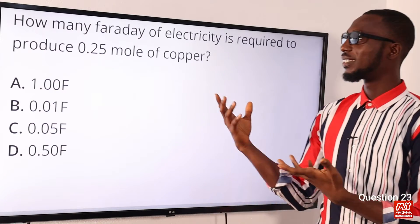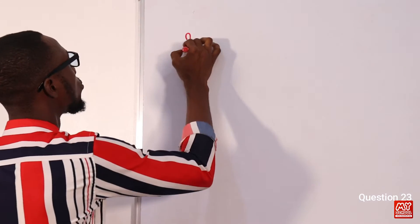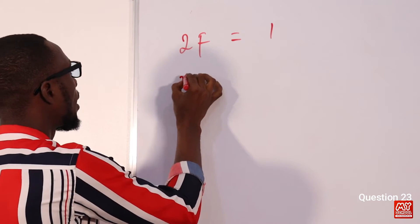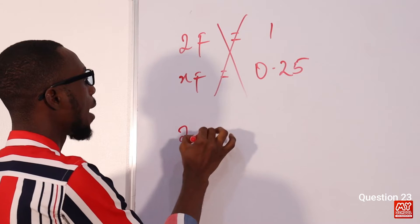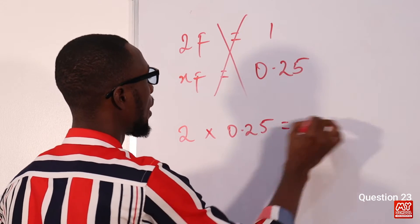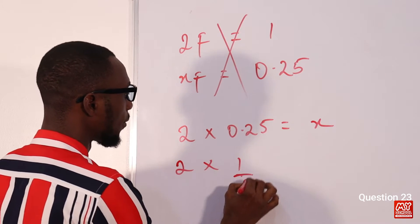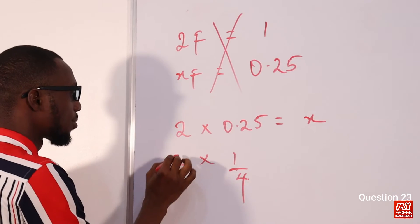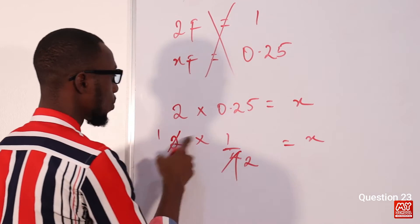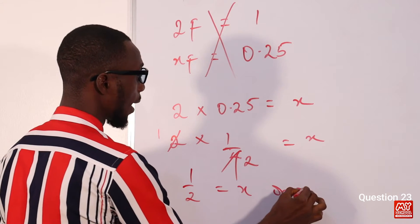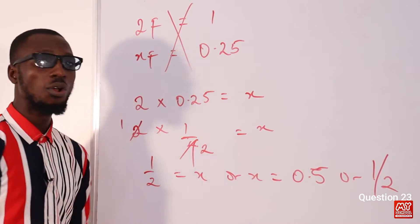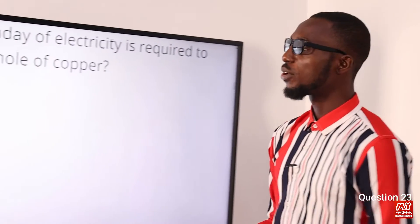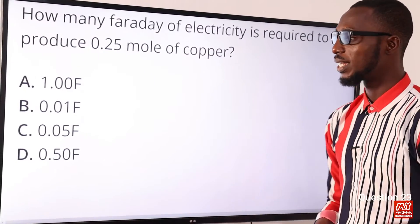Question 23: How many Faradays of electricity are required to produce 0.25 moles of copper? Copper is divalent (Cu²⁺), so 2 Faradays produce 1 mole. By cross-multiplication: 2 × 0.25 = x × 1, so x = 0.5. Since 0.25 equals 1/4, we get 2 × 1/4 = 1/2, so x = 0.5. The correct option is option D: 0.5 Faradays.